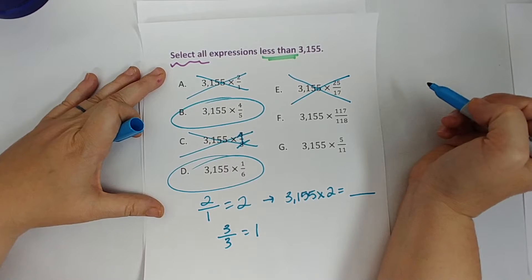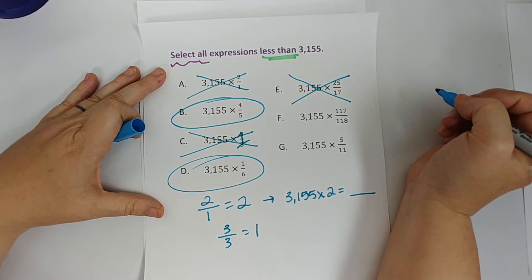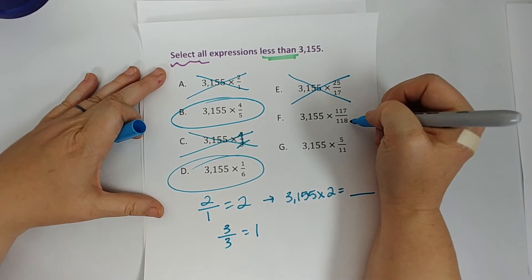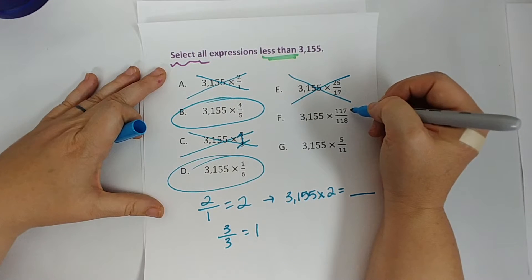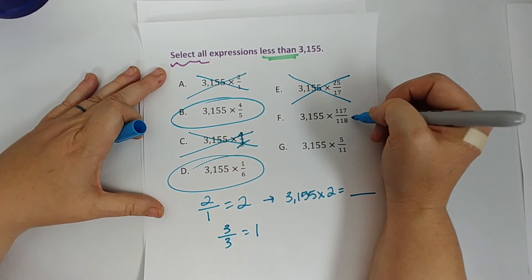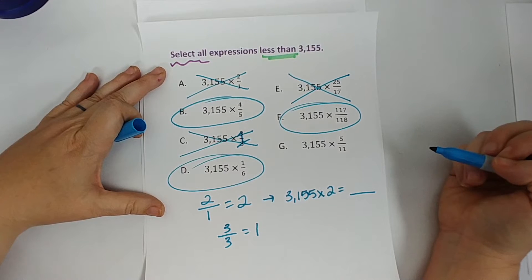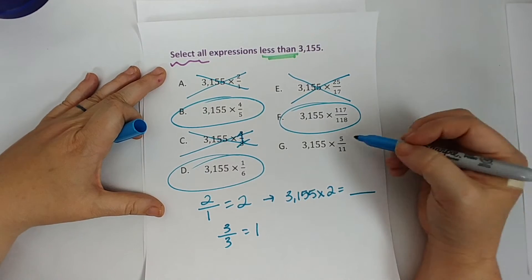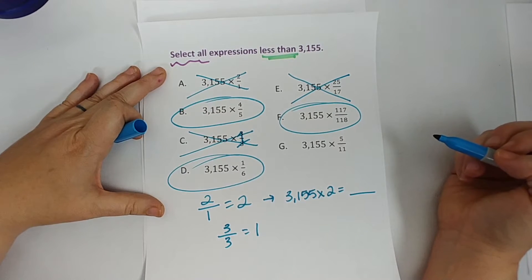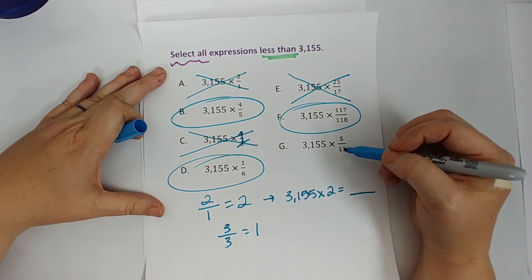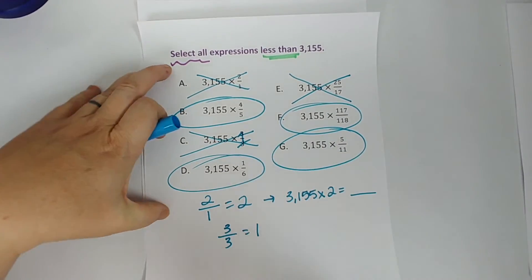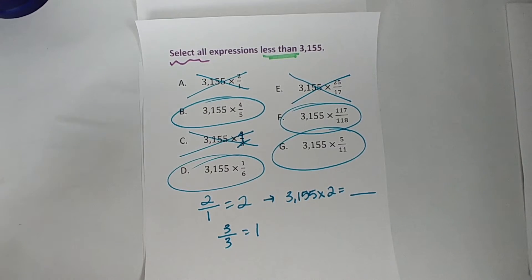Next: 3,155 times 117 over 118. It's an ugly fraction, but is the numerator less than the denominator? Yes — 117 out of 118 means I'm just barely short of one whole, so this fraction is less than 1. Multiplying by it gives a number less than what I started with — circle it. Last one: 3,155 times 5 elevenths. Five elevenths is clearly less than 1 — eleven elevenths would be equal to one. So when I multiply I'll get less than what I started with. Those are your answers.